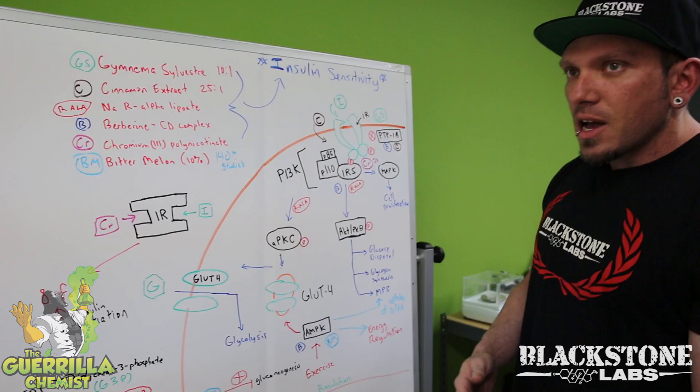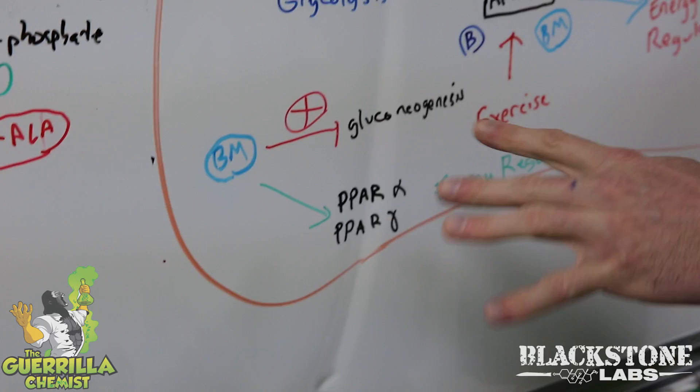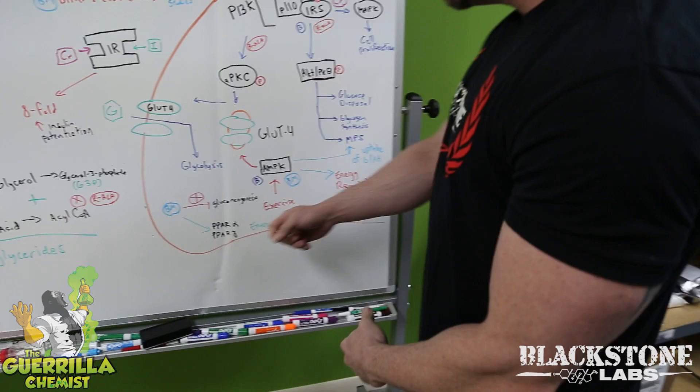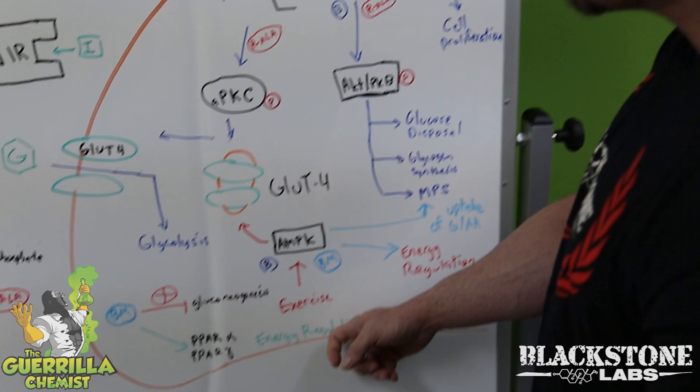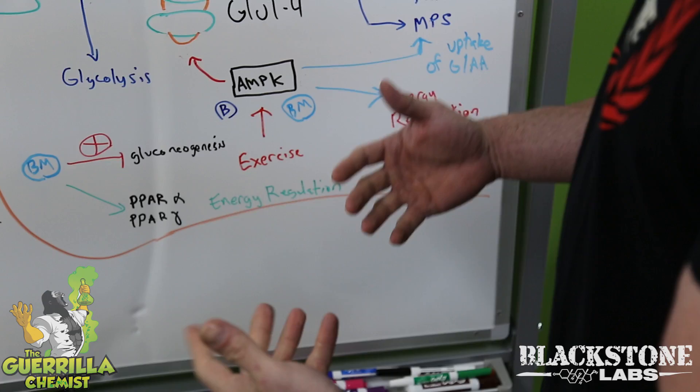Bitter melon also activates PPAR-alpha and PPAR-gamma. These are complex enzymes we're still trying to fully understand, but many new diabetic medications are being targeted toward them because they're responsible for energy regulation — controlling the amount of glucose you use and burn, as well as lipid storage and lipid oxidation. The more effectively you can balance these, the better your body composition results.